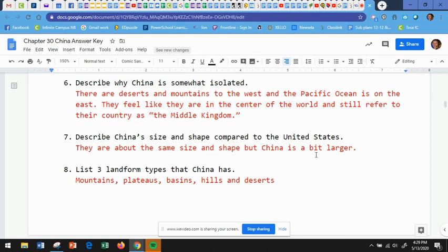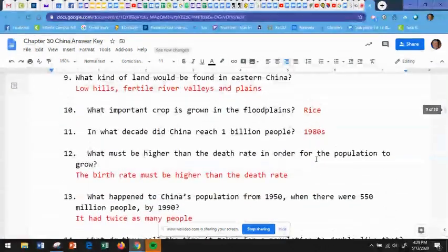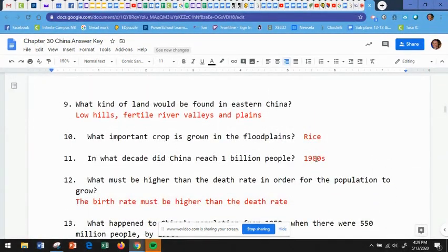Number eight, list three landform types that China has. Well, they have mountains, as we talked about, plateaus, basins, hills, and deserts. Number nine, what kind of land would be found in eastern China? They have low hills, fertile river valleys, and plains. So if they have fertile river valleys, the odds are they also have rivers to transport things.